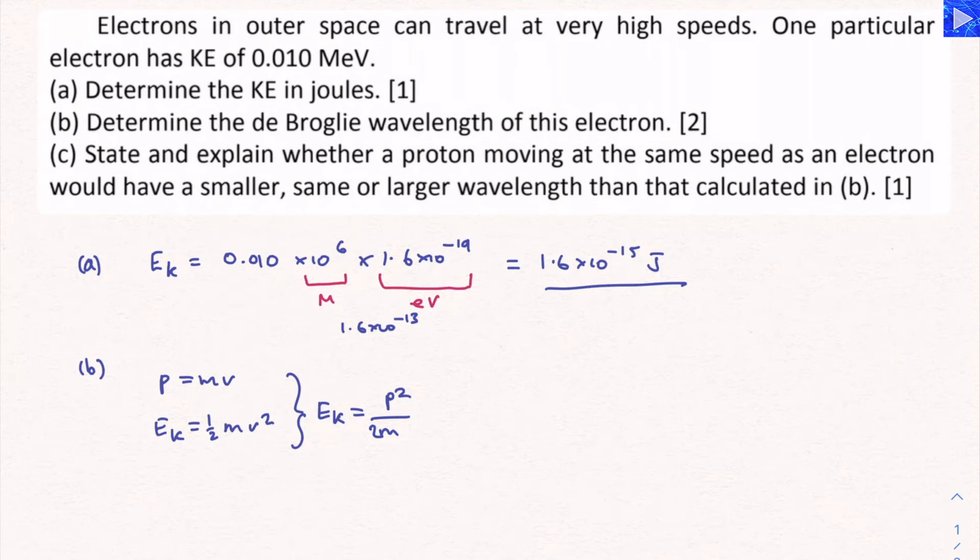And that means that momentum is equal to the square root of 2m times the kinetic energy. So we can actually use that and substitute that expression into the de Broglie wavelength equation. We want to work out the de Broglie wavelength, so h over mv. So we're going to substitute in what we just worked out there. So now we have the de Broglie wavelength based on the kinetic energy, so we can use that.